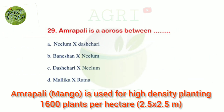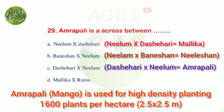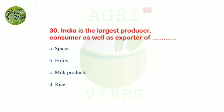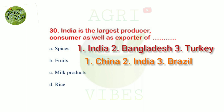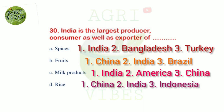Next question: Amrapali is a cross between — options: Neelam into Dasheri, Baneshan into Neelam, Dasheri into Neelam, and Mallika into Ratna. Correct answer is option C, Dasheri into Neelam. Last question: India is the largest producer, consumer, as well as the exporter of — options: spices, fruits, milk products, and rice. Correct answer is option A, spices. India is also second in fruit production and second in milk production.